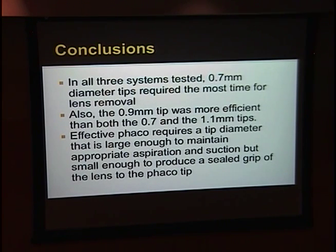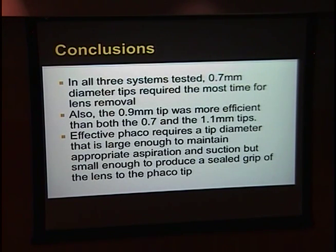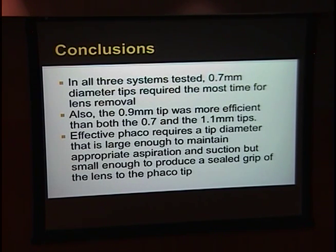Some limitations of our study are that it is in vitro and cannot completely replicate what we would see in surgery. We also used one single size for lens fragments; using different sizes as encountered in surgery might yield different results. In the future, we could try different size lenses to see how they respond to different tip sizes. Additionally, all FACO systems employed a peristaltic vacuum setting, whereas testing in a Venturi system — which creates a constant vacuum level — may yield different results.